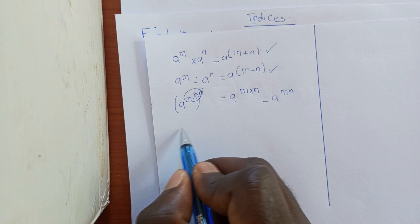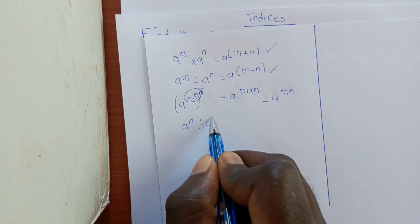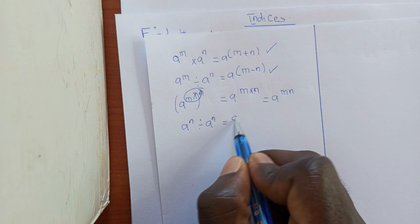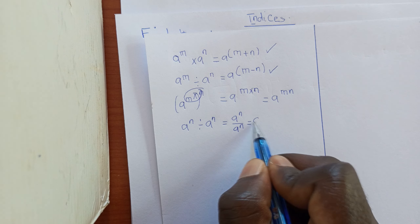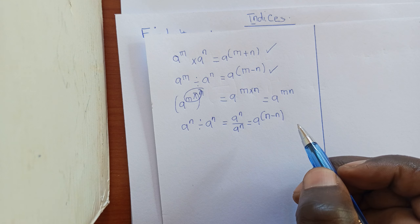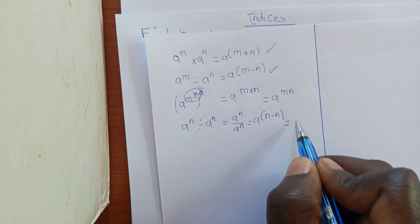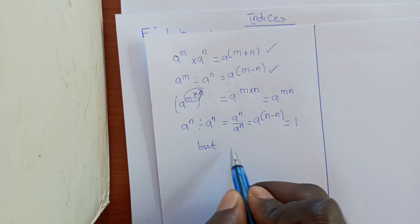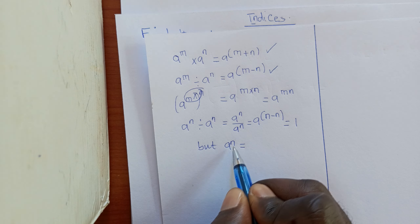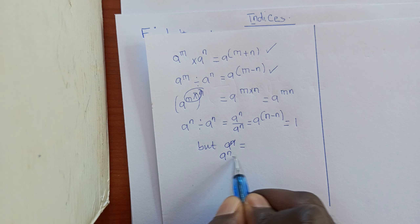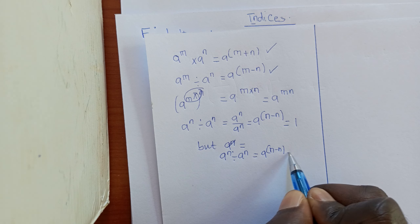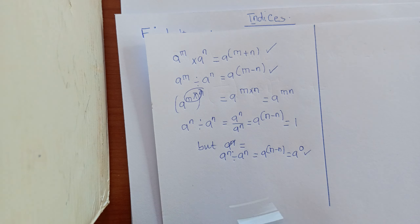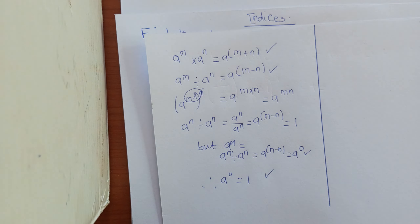Consider A raised to N divided by A raised to N. Subtracting the powers gives A raised to N minus N, which is A raised to 0. But any number divided by itself equals 1. Therefore we conclude that any number raised to 0 is equal to 1. Those are the key rules of indices we apply here.